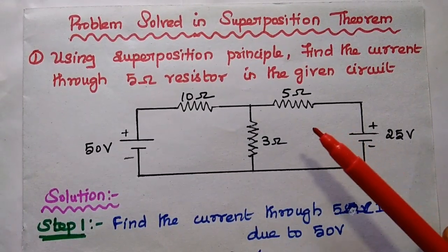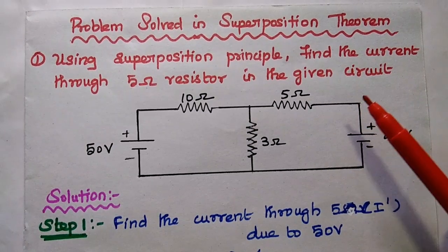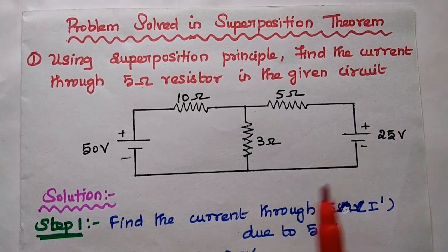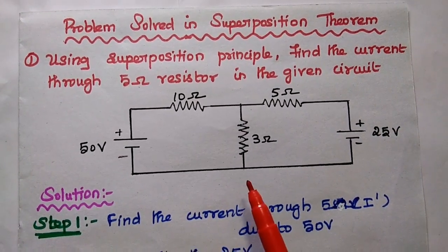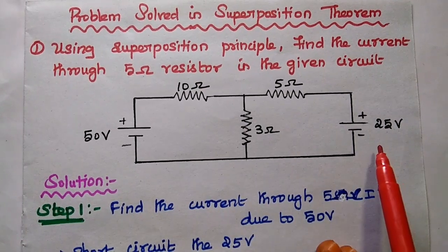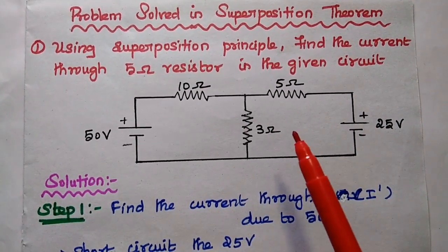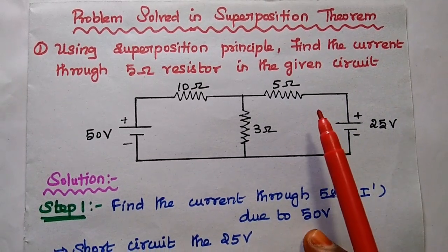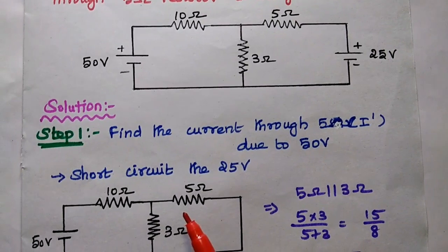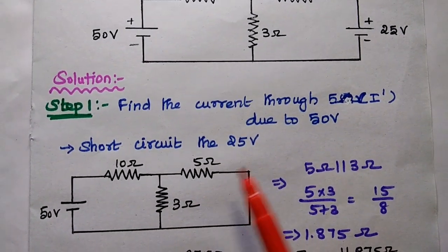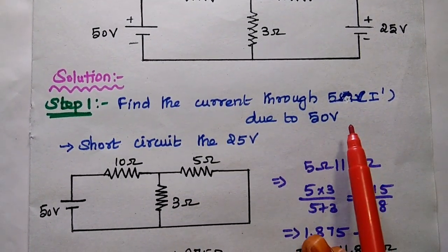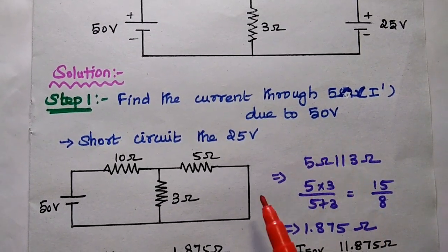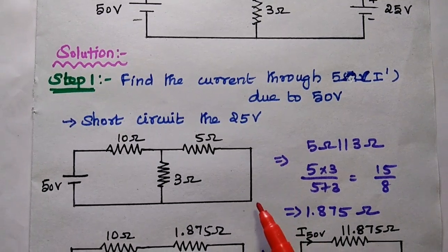The next problem: using superposition principle, find the current through the 5 ohm resistor in the given circuit. This is the given circuit with two voltage sources — 50 volt and 25 volt. We are going to use superposition theorem to find out the current through this 5 ohm resistor. The first step is to find the current through this 5 ohm resistor due to the 50 volt voltage source, at the time the 25 volt is short-circuited.